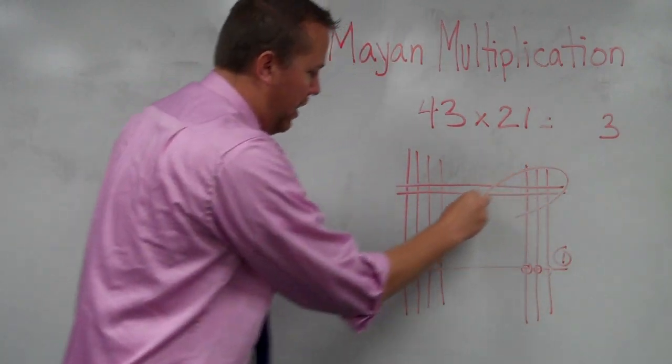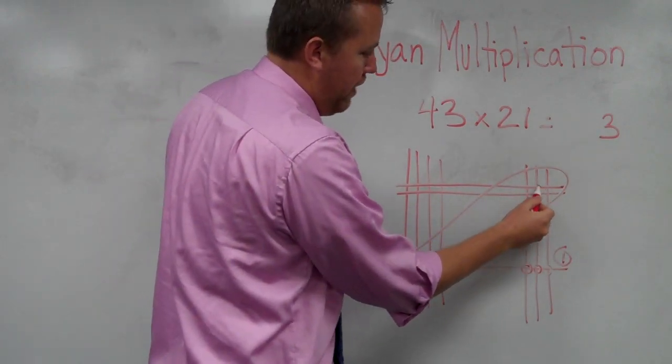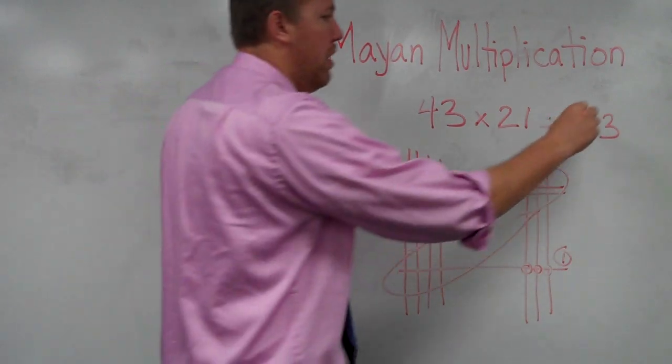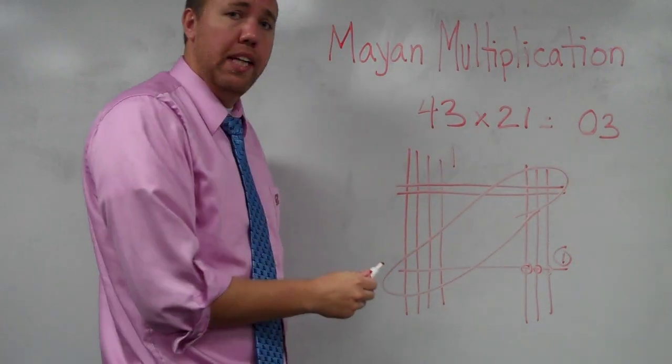Then we look at this cross section right there. And we count the intersections. 1, 2, 3, 4, 5, 6, 7, 8, 9, 10. Just like with the algorithm, we put the zero there and we carry the 1.